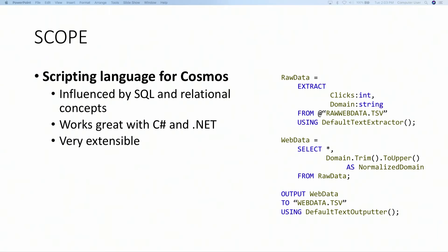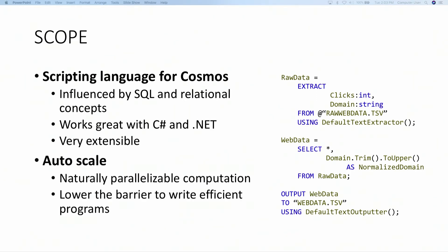On the screen I have a sample hello world Scope script where you can see you load some data, run the extractor of your choice, then run a select query. There's also an AS clause where we're actually using a C# statement using the string methods on the .NET library, and outputting the data back to Cosmos. The reason Cosmos has been very successful within Microsoft is primarily because we just make it work — you write a job and run it on one terabyte, 10 terabyte, 100 terabyte, or even a petabyte and it just works.